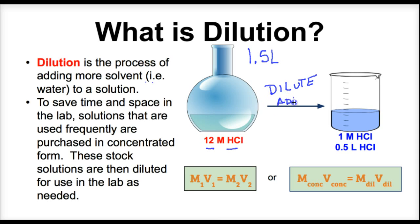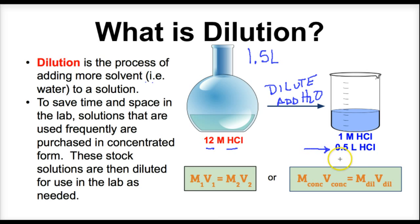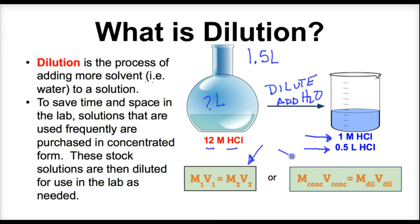The way we dilute it is we add water — technically you should always add acid to water and not water to acid, but for this example we'll just say we add water. So suppose I want to set up a lab and I need to make about 0.5 liters of hydrochloric acid solution. I want it fairly diluted — say a 1 molar solution — so it won't cause damage if it gets on your skin or in your eyes. How do I figure out how much of the super concentrated stuff I need? We can use the dilution formula.